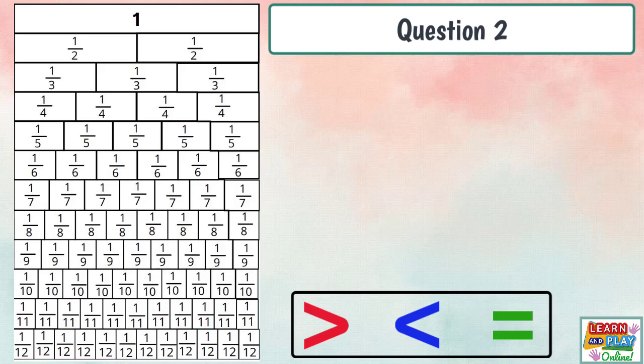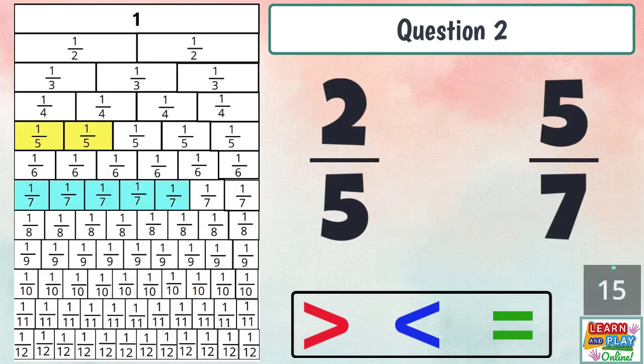Question two. Compare two fifths and five sevenths. Two fifths is less than five sevenths.